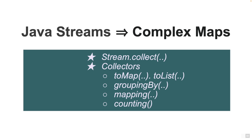Here we're going to look at how to convert Java streams — usually a list — into maps. We're going to look at collectors like toMap, toList, and then we'll try to group by certain attributes or map by certain attributes, and also do some summarization of the list. So let's start.